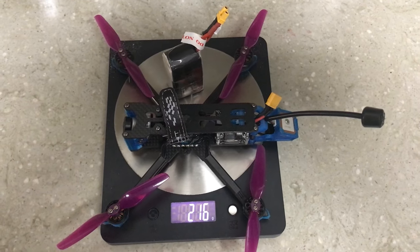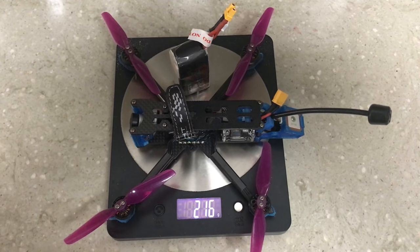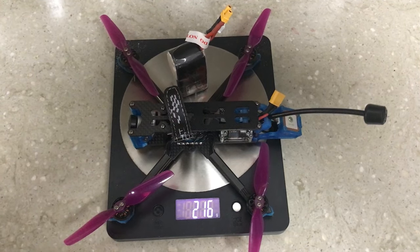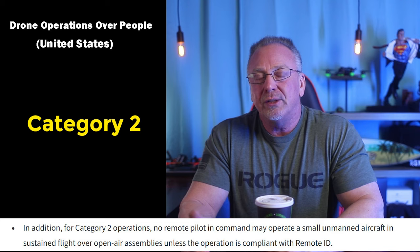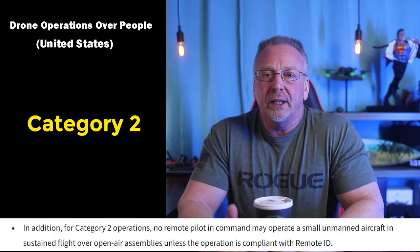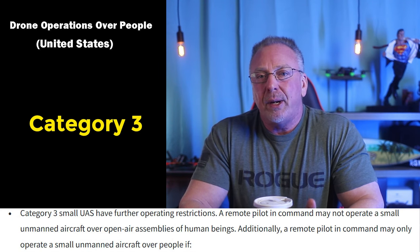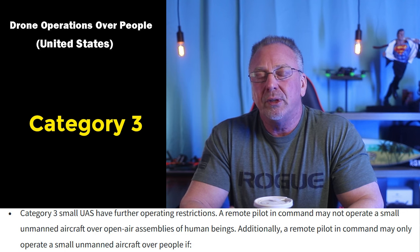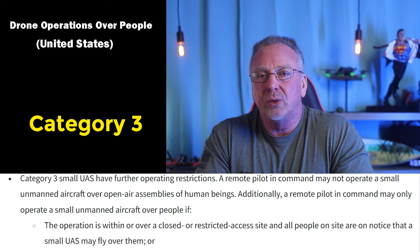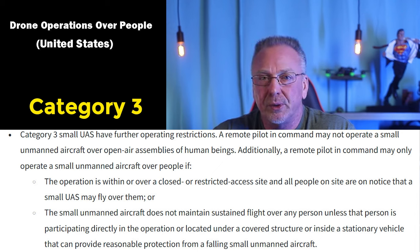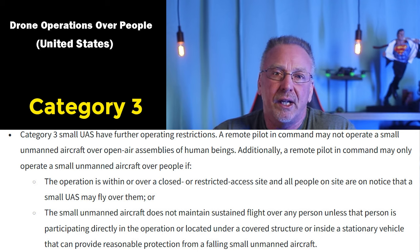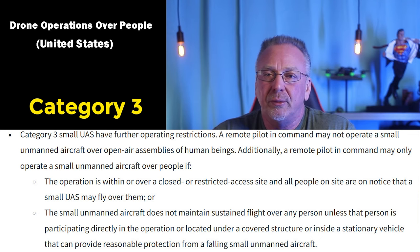In short, you're pretty limited to category one today, assuming you've met its requirements. A small 4-inch FPV like the one shown here is 216 grams with a battery and without ducts or prop guards. For category two, no remote pilot may operate in sustained flight over an open air assembly unless compliant with Remote ID. Category three has more restrictions: the pilot cannot fly over open air assemblies, and may only operate over people if within a closed or restricted-access site where all people are on notice, or the aircraft does not maintain sustained flight over any person not directly participating.